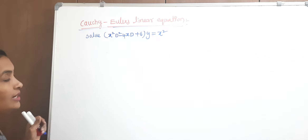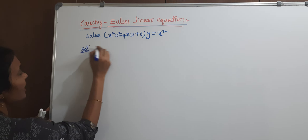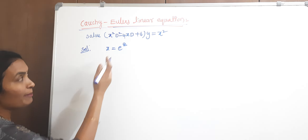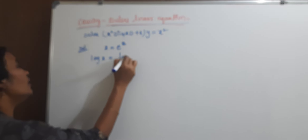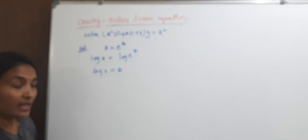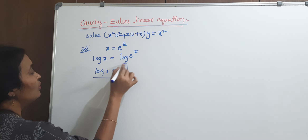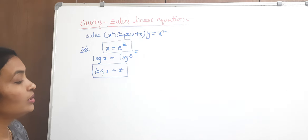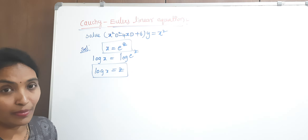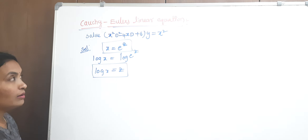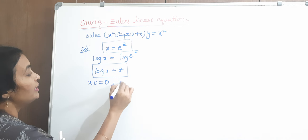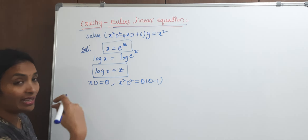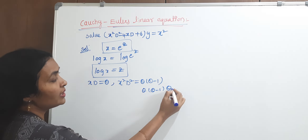In this case, consider x equals e to the power of z. If you apply the logarithm on both sides, log x equals log e to the power of z; log and exponential both cancel, so z remains. We then have: x·D equals theta, x squared·D squared equals theta(theta minus 1), and x cubed·D cubed equals theta(theta minus 1)(theta minus 2).